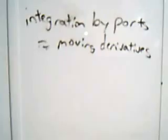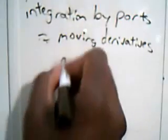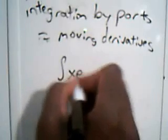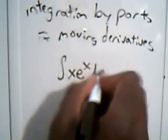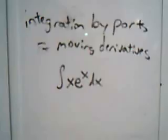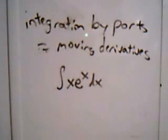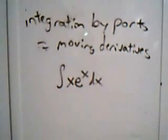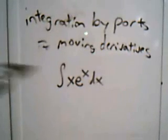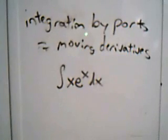What do we mean by that? Let's say we have an integral, the integral of x times e to the x dx. Now the way you should approach integration by parts is, which direction should I move the integral such that the integrand becomes simpler.